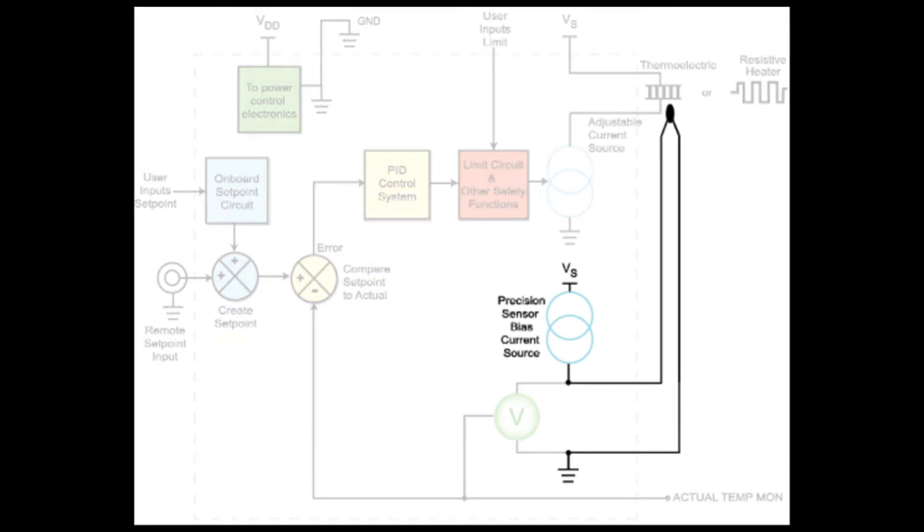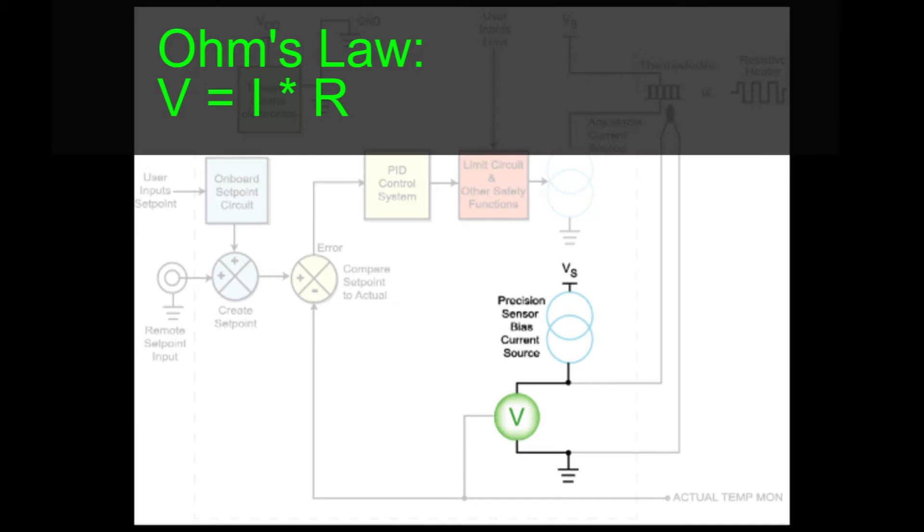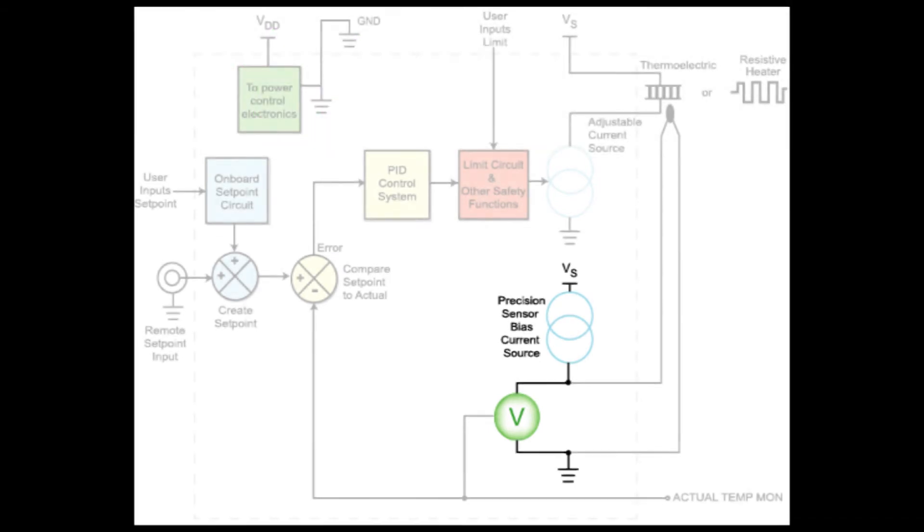The precision sensor bias current source drives the temperature sensor at a known level, making the sensor voltage stable and accurate. The voltage across the sensor is given by Ohm's law. The maximum and minimum voltage bounds are specified in the temperature controller datasheet. The lowest possible current should be used to minimize the effects of self-heating, which can lead to a falsely reported higher temperature.